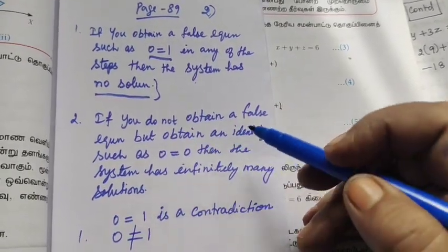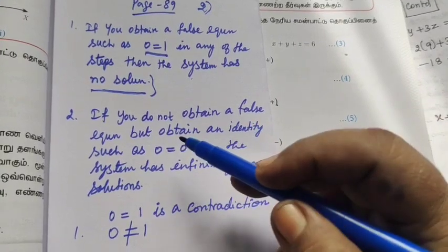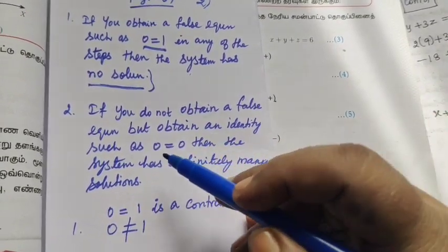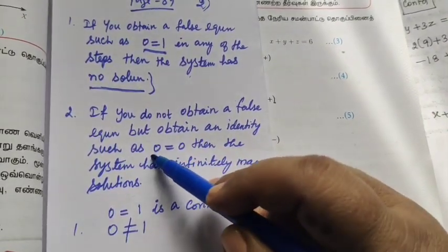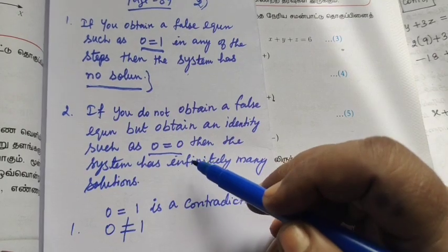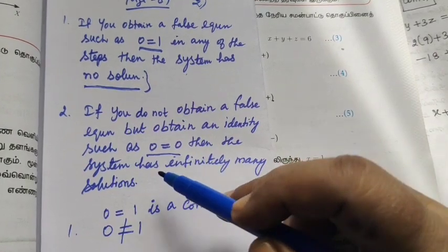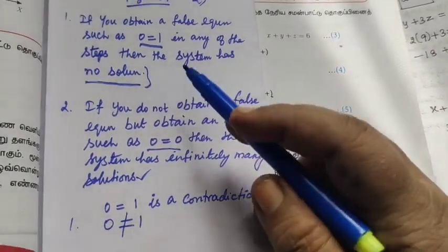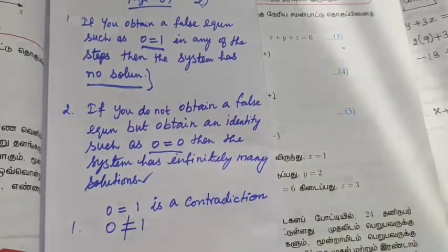If we do not obtain a false equation but obtain an identity — identity means 0 equal to 0 — the system has infinitely many solutions. So these are the two key points.